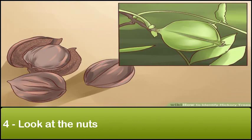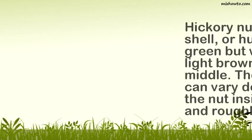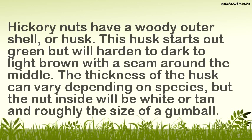Step 4: Look at the Nuts. Hickory nuts have a woody outer shell, or husk. This husk starts out green but will harden to dark to light brown with a seam around the middle. The thickness of the husk can vary depending on species, but the nut inside will be white or tan and roughly the size of a gumball.